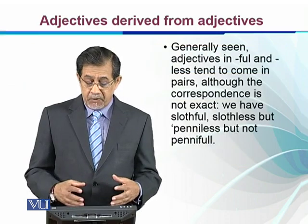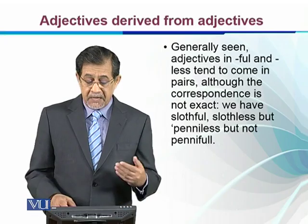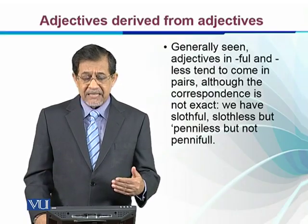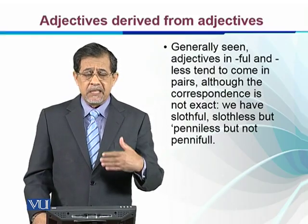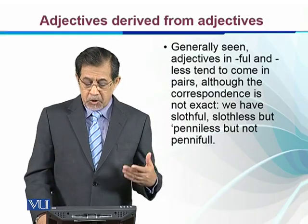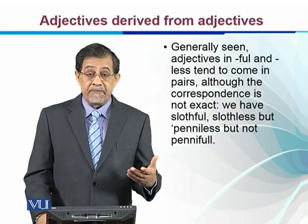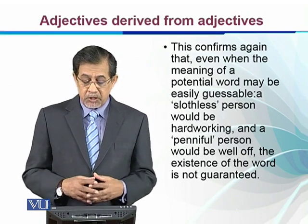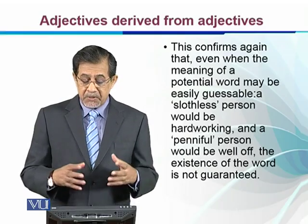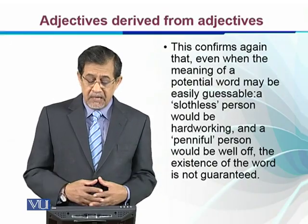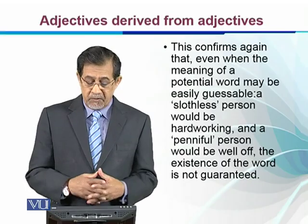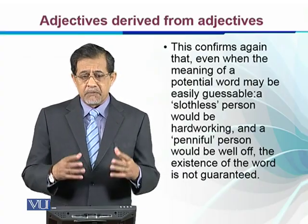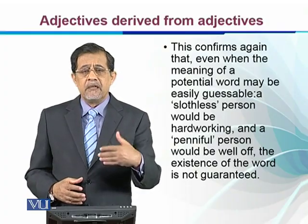Generally, adjectives in -ful and -less tend to come in pairs. For example, if we have 'helpful,' there is also 'helpless.' Although the correspondence is not exact — if we have an adjective with -less, it is not necessary that there should be another with -full. This confirms that even when the meaning of a potential word may be easily guessable, such as 'slothless' meaning hardworking or 'painiful' meaning well-off, the existence of the word is not guaranteed. This is how we form adjectives from adjectives, or with the help of verbs and nouns.